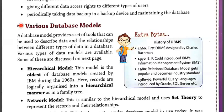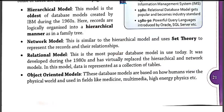The next model is the network model. A network database model consists of a collection of records connected to one another through links. Each record is a collection of fields or attributes, and a link is associated between two records.